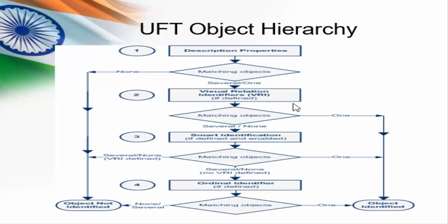The second level is visual relation identifiers, and this will be executed only if it is defined. VRI uses the neighbor object to try to identify the object. Even after using VRI, if we are unable to identify the object, then it will go to the next level — that is smart identification.